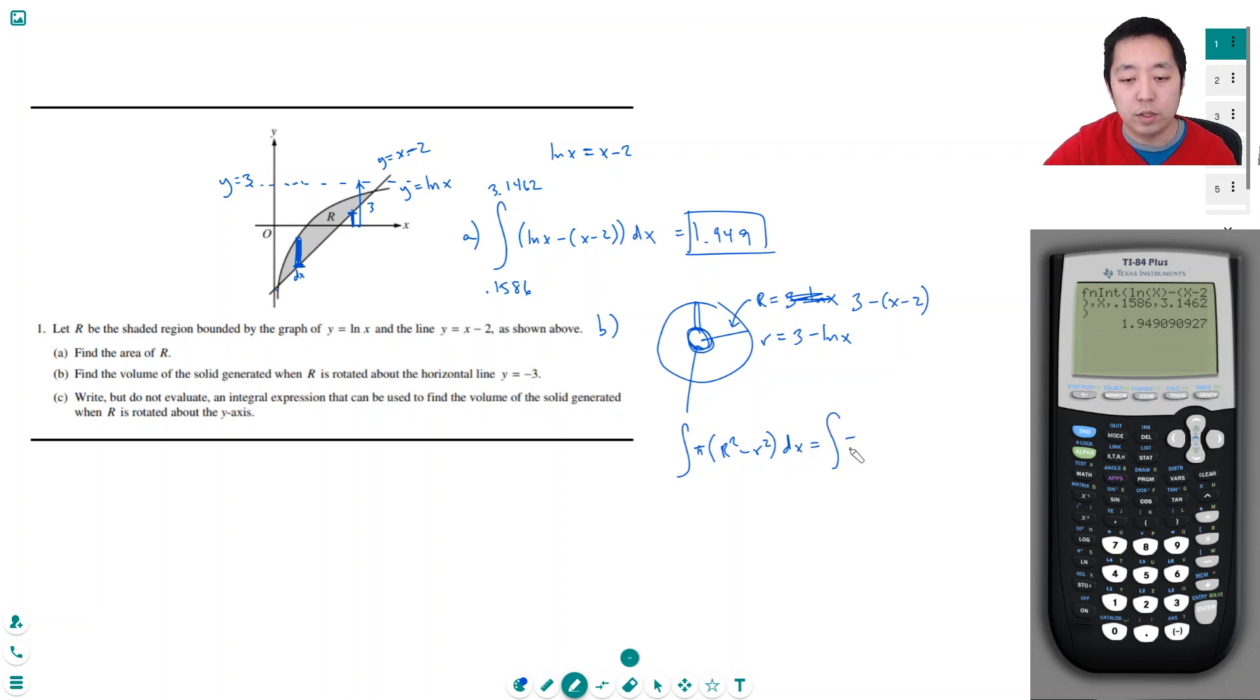And so then we're going to do the integral of pi. So the area of this disk is big R squared minus little R squared, right? So that's the integral, big R squared, which is (3 minus (x minus 2)) squared minus (3 minus ln x) squared.